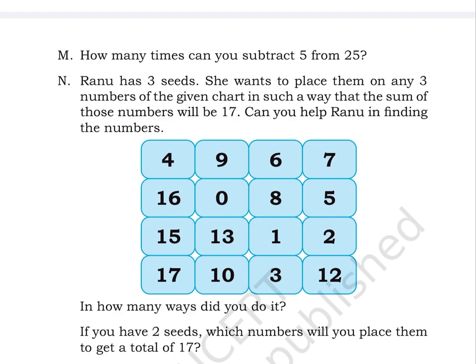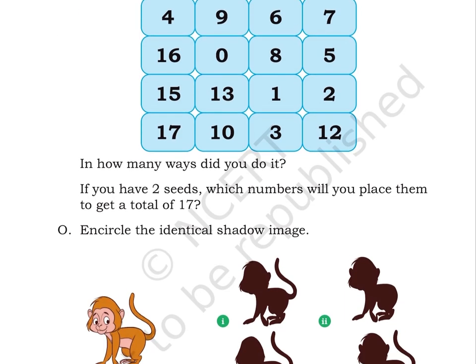We have a table here with 4 columns and 4 rows. The numbers are in this order: Row 1: 9, 6, 7. Row 2: 16, 0, 8, 5. Row 3: 15, 13, 1, 2. Row 4: 17, 2, 3, 12. In how many ways did you do it? If you have 2 seeds, which numbers will you keep to get a total of 17?